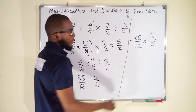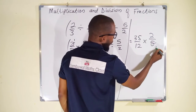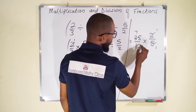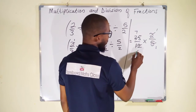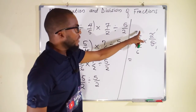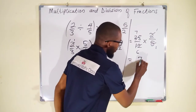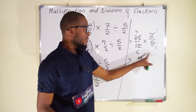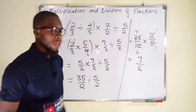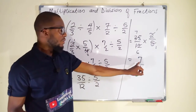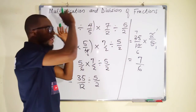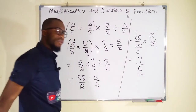Reducing 35/12 × 2/5: 5 into 5 gives 1 and 5 into 35 gives 7; 2 into 2 gives 1 and 2 into 12 gives 6. So we have 7 times 1 over 6 times 1, which is 7 over 6. Since 7 and 6 have no common factor, we stop here. All these fractions finally simplify to 7 over 6.